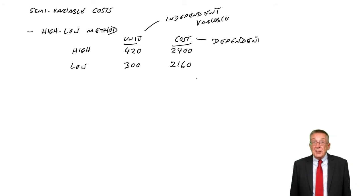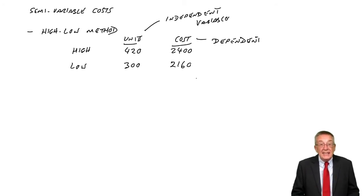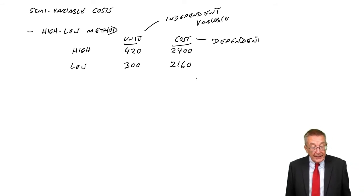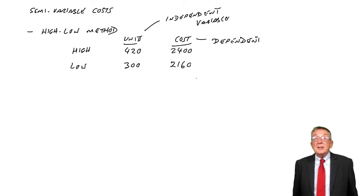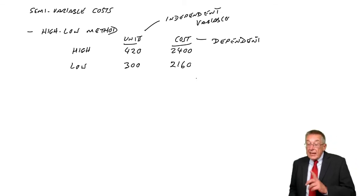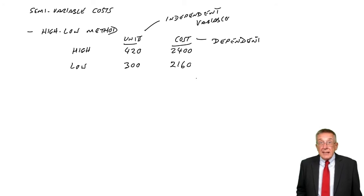So you take the highest and lowest of the one that we're depending on, the independent variable, which may not be the same as the highest and lowest cost. I'm not going to waste time checking. It doesn't matter. It's the highest and lowest of the independent one of the production. And having got that, we then carry on exactly as before.